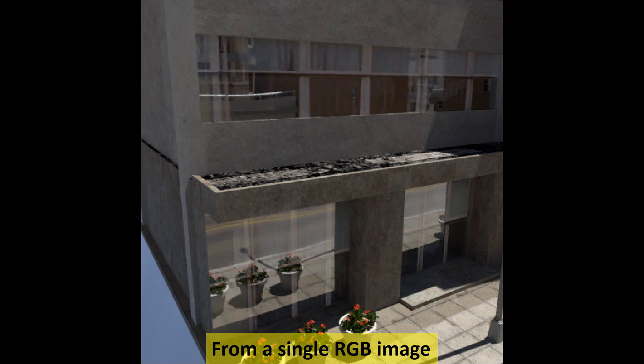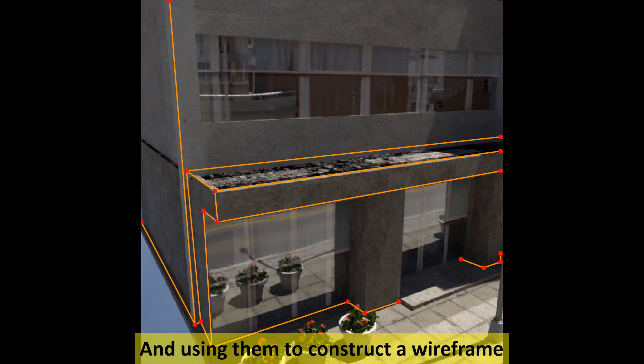Our method takes a single RGB image as the input. We first extract C junctions from the image, which are the actual intersections of physical planes, and connect those junctions to construct a partial wireframe.